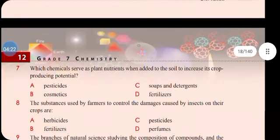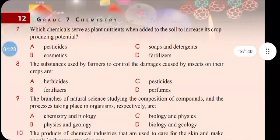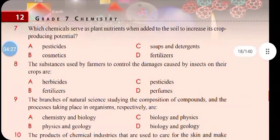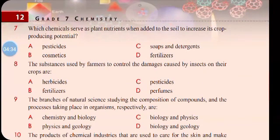Number seven: which chemical serves as a plant nutrient when added to soil to increase its crop-producing potential? a) pesticide, b) cosmetics, c) soap and detergent, d) fertilizer. The correct answer is d) fertilizer. Fertilizer has different nutrients such as nitrogen.